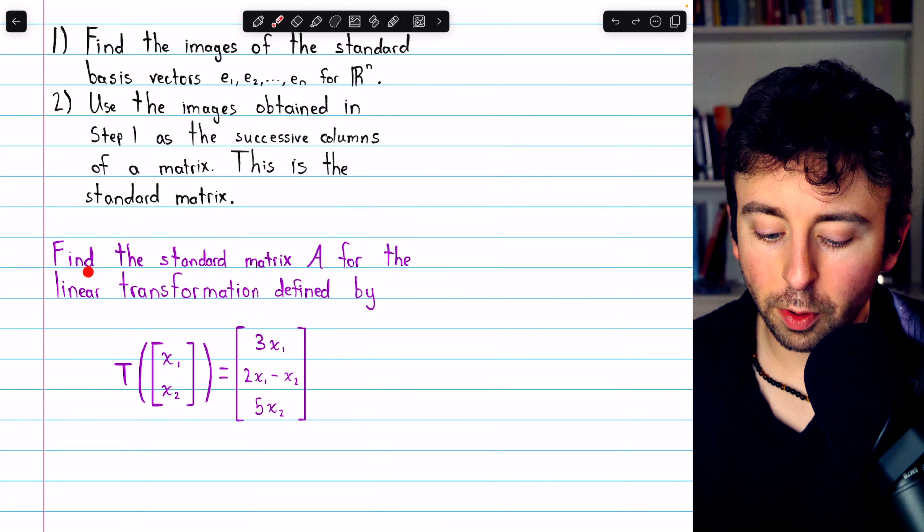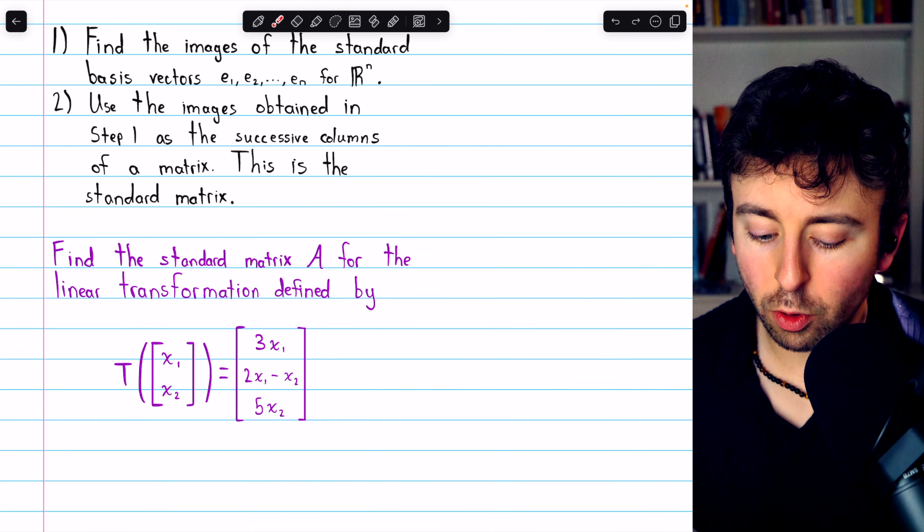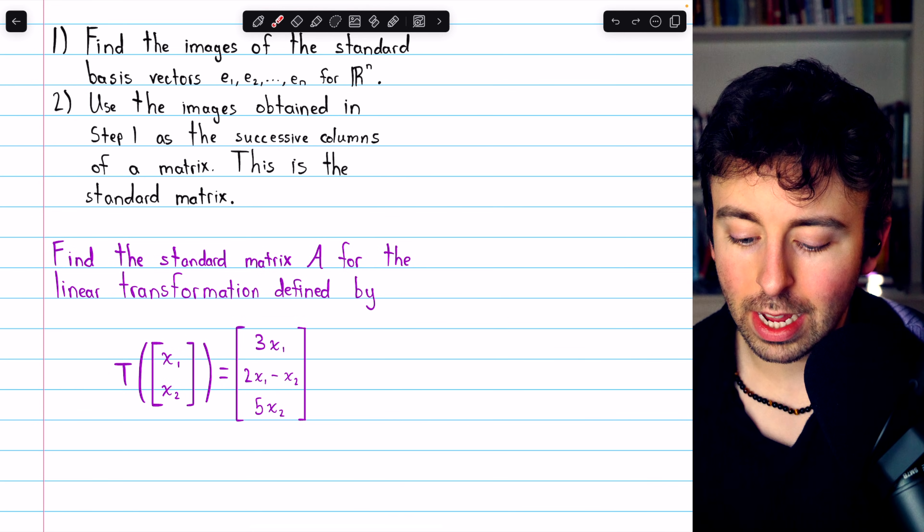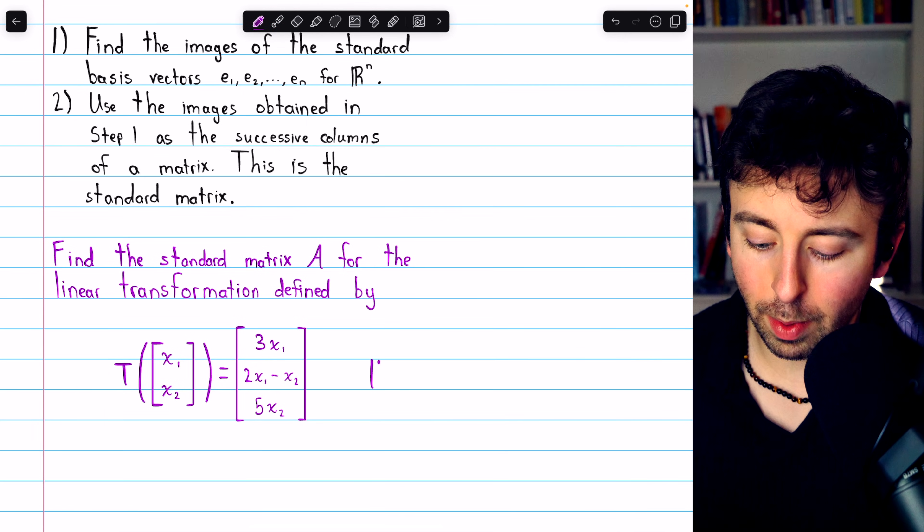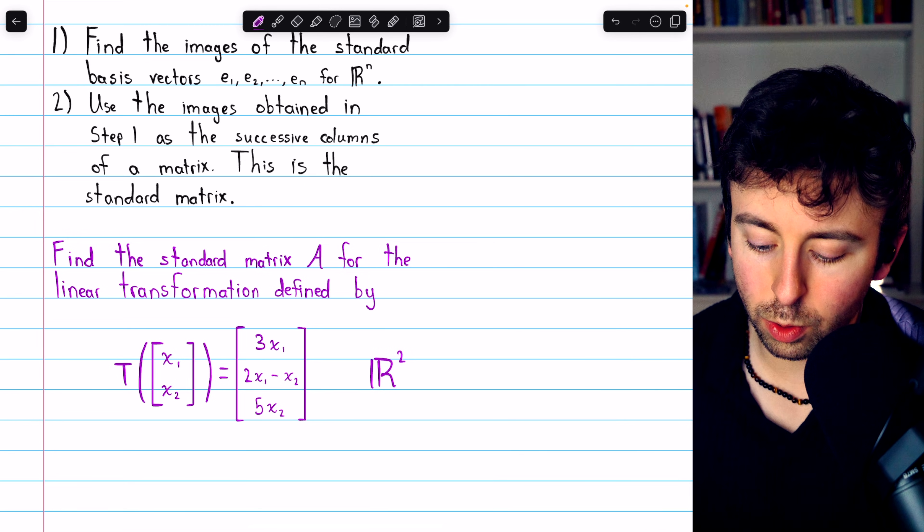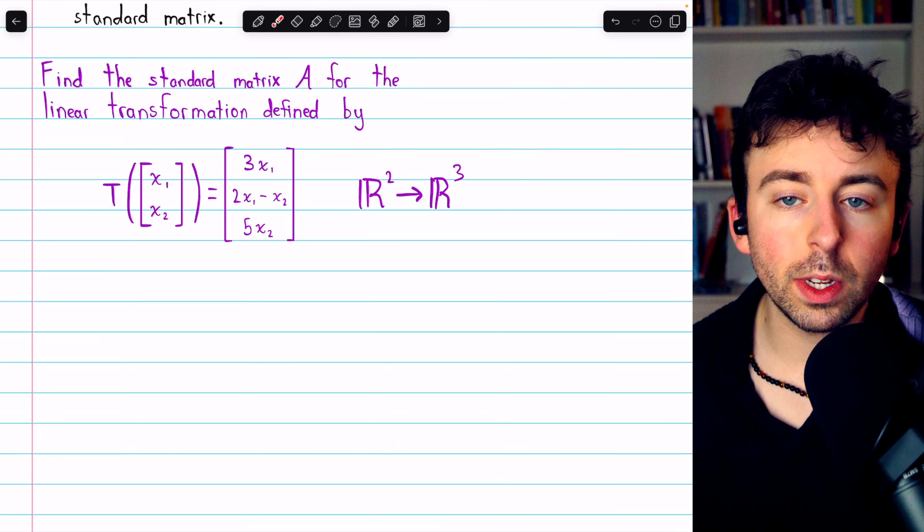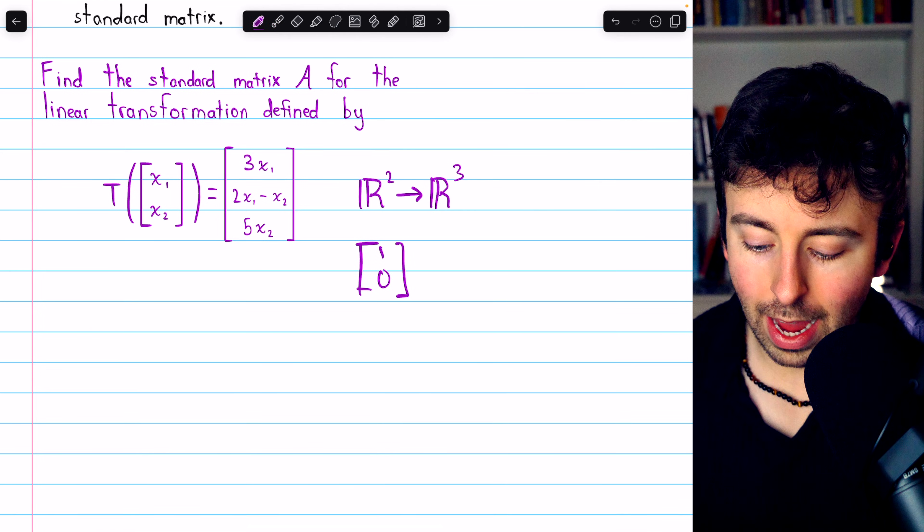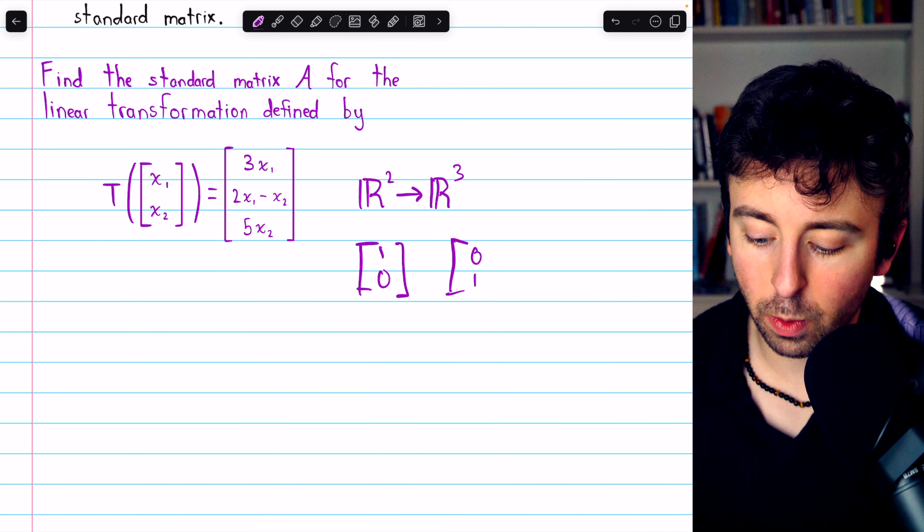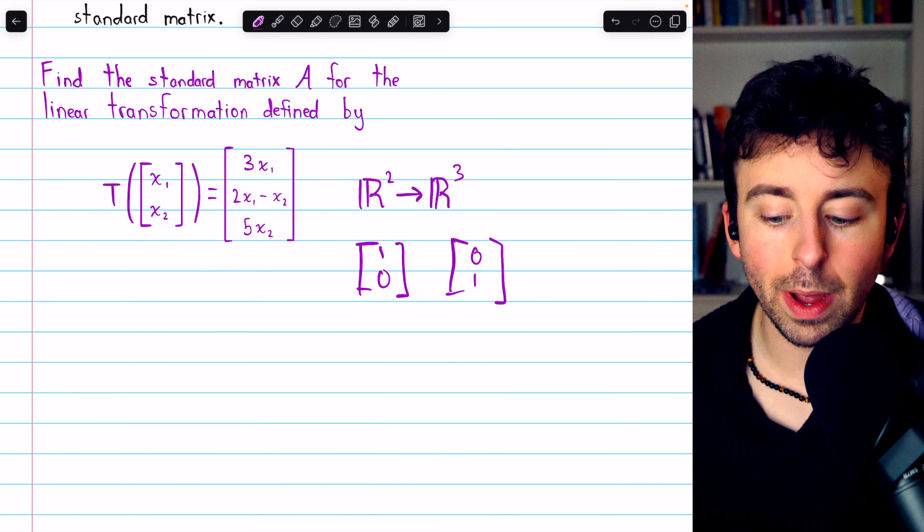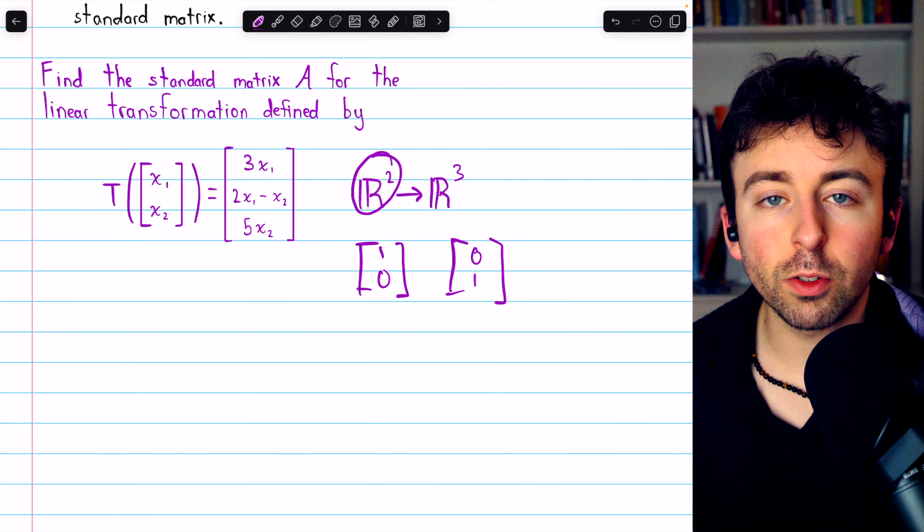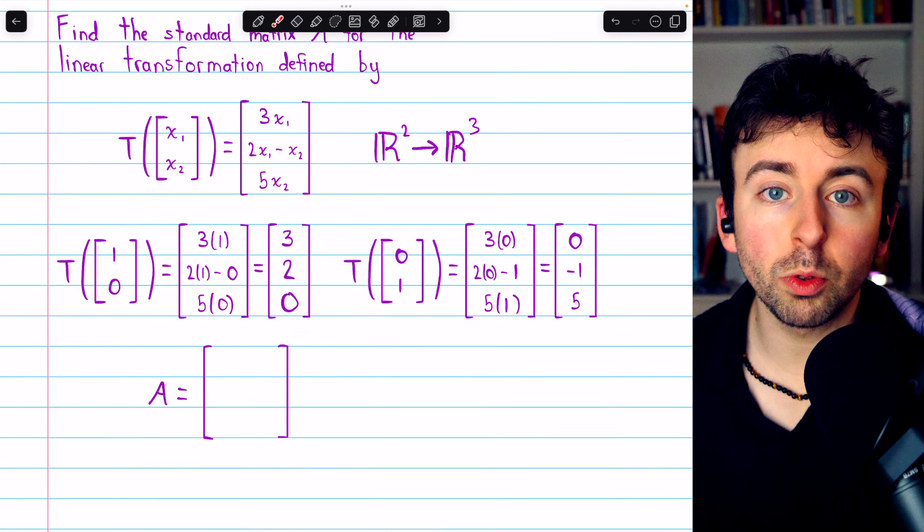Let's see an example. Here is our first problem - we're asked to find the standard matrix for the linear transformation defined by this equation. Note that this is a transformation from R^2 to R^3. So to find the standard matrix, all we have to do is find the image of (1,0) and the image of (0,1), those are our two basis vectors in R^2, and then we can use those images to construct the standard matrix.